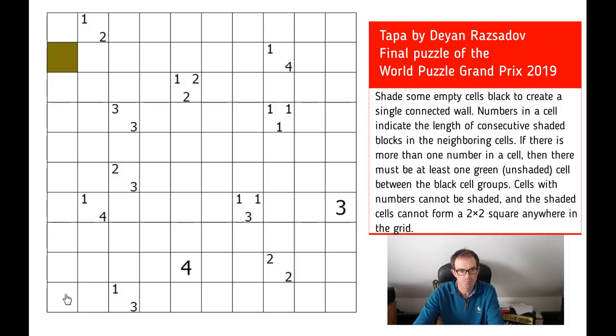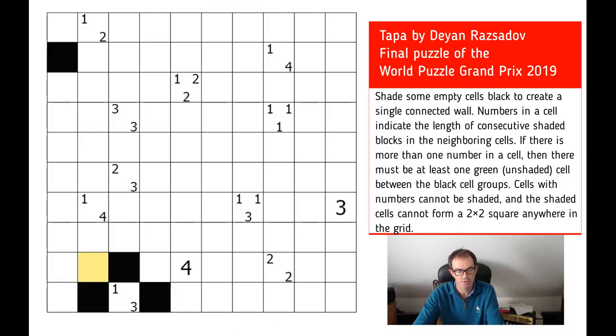Then he moves down to the bottom of the grid and looks at this 1, 3 combination. Obviously, 1 and 3 have to be separated by at least one cell. That gives us 1 plus 3 plus 1 cell is 5. There are exactly 5 cells around this clue here. So actually, you can write in all of those squares must be black.